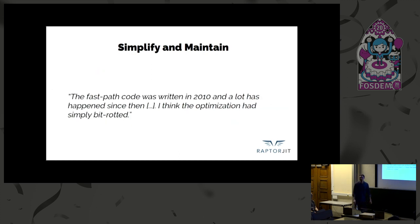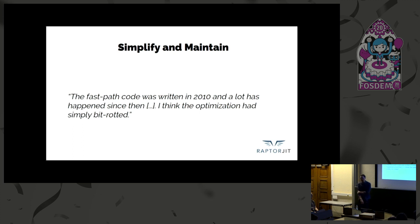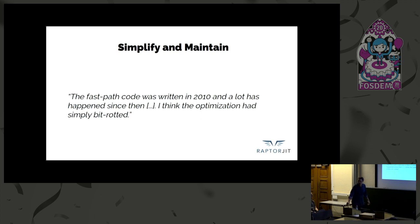In the description, Luke concludes that the fast path code was written 10 years ago and a lot has happened since then. The CPU architecture, the operating system — Linux in our case — and even compilers like GCC had really evolved in that time. He concludes that the optimization had simply bit-rotted. What I want to stress is that this is not to bash this individual optimization — it's just to say that if you have smart optimizations that try to outperform certain components in your system, you have to account for the cost of maintaining them and continuously verifying that they still actually make your program faster.